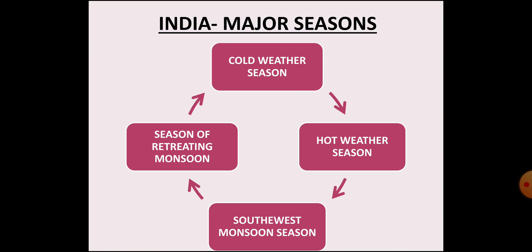India experiences four major seasons in a year that follow each other in a cycle. The first one, the cold weather season or the winter season, extends from December to February. Then the hot weather season or the summer season extends from March to May. Then the southwestern monsoon season or the rainy season extends from June to September. And the fourth season is the season of retreating monsoon or the autumn season, extending over October and November.